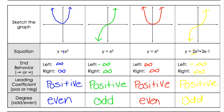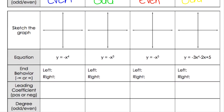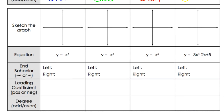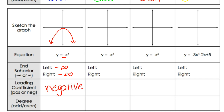On the second row, we have negative x⁴. Negative x⁴ looks like an upside-down u-shape. Our left side is now pointing downwards, and our right side is also pointing downwards towards negative infinity. Our leading coefficient on this one is negative, and our degree on this one is fourth degree, which is even.